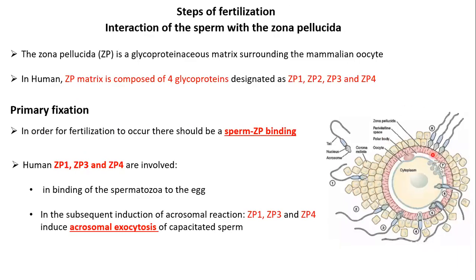Once they reach the zona pellucida, as explained in the last chapter, it is composed of glycoproteins — a matrix of glycoproteins surrounding the oocyte. This glycoproteinaceous matrix is composed of four types of glycoproteins: ZP1 (zona pellucida 1), ZP2, ZP3, and ZP4, which together compose this zona pellucida.